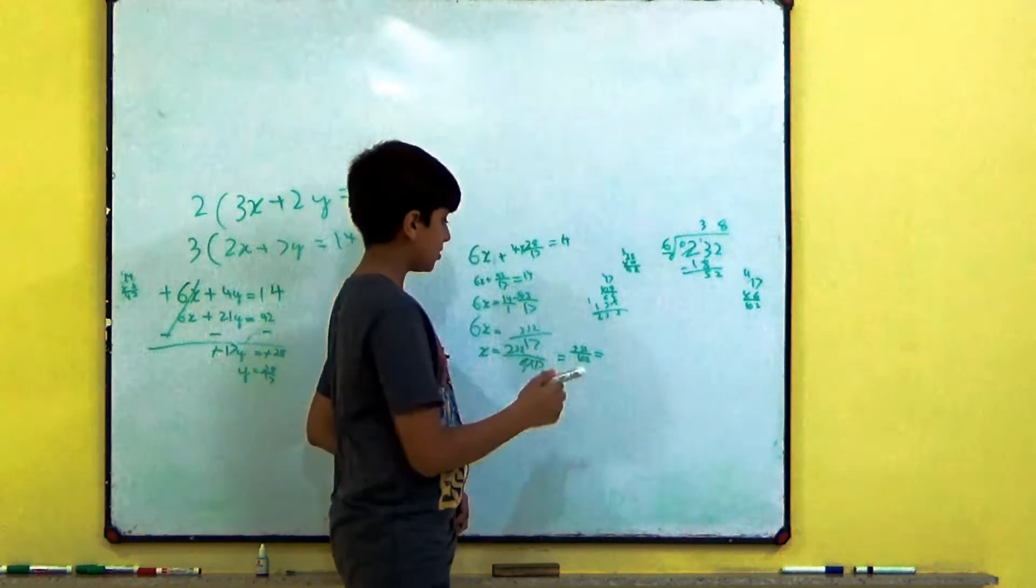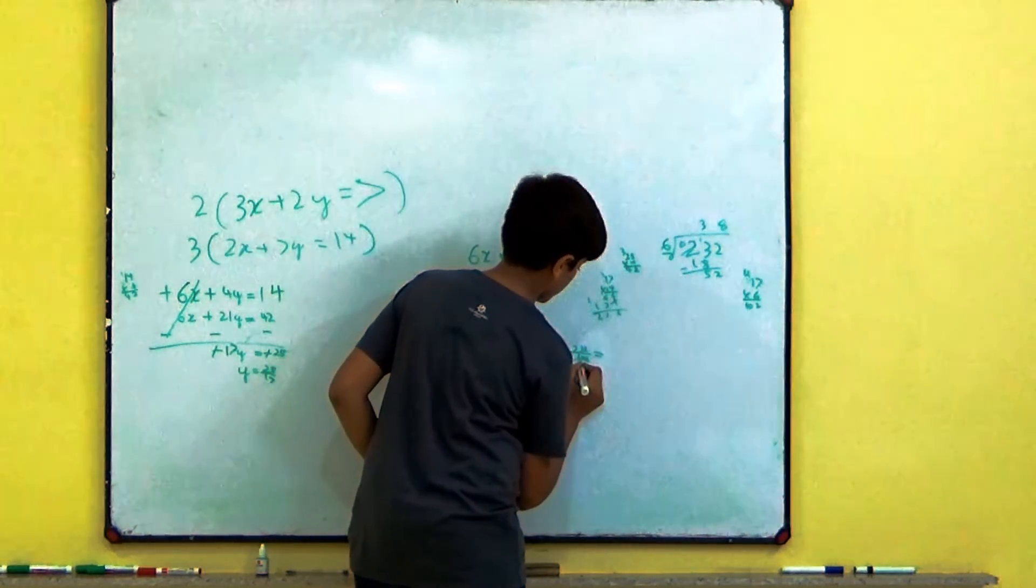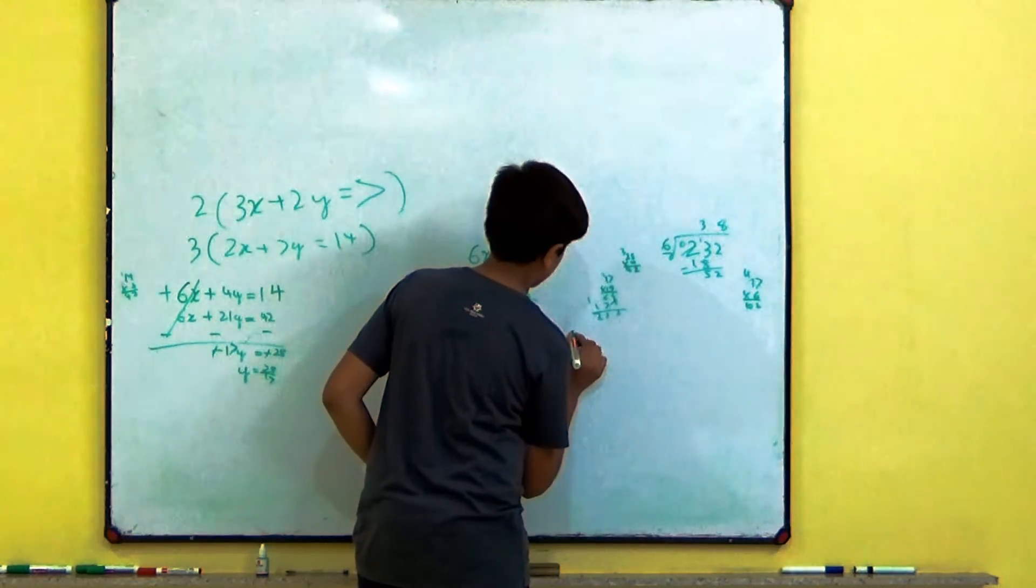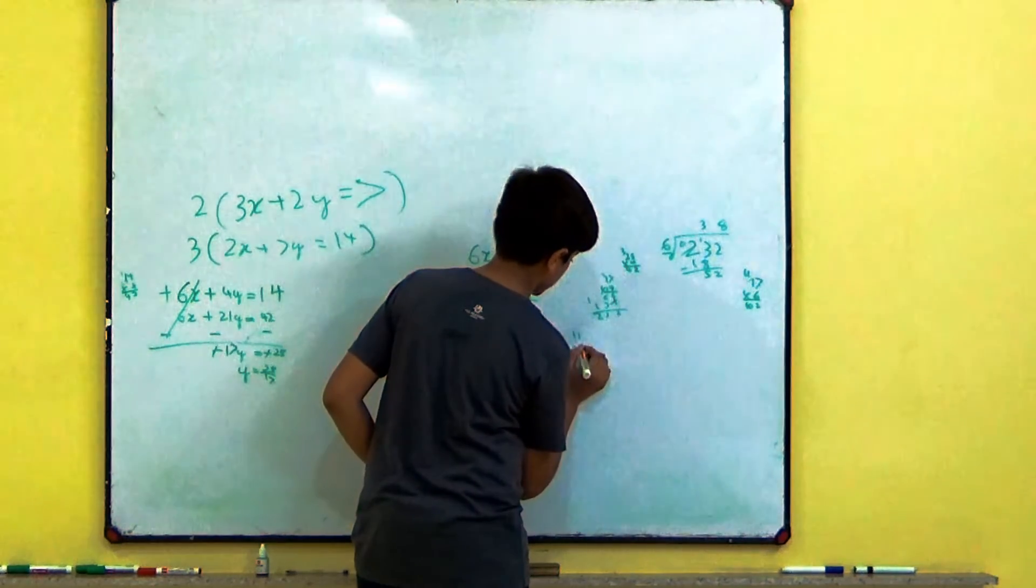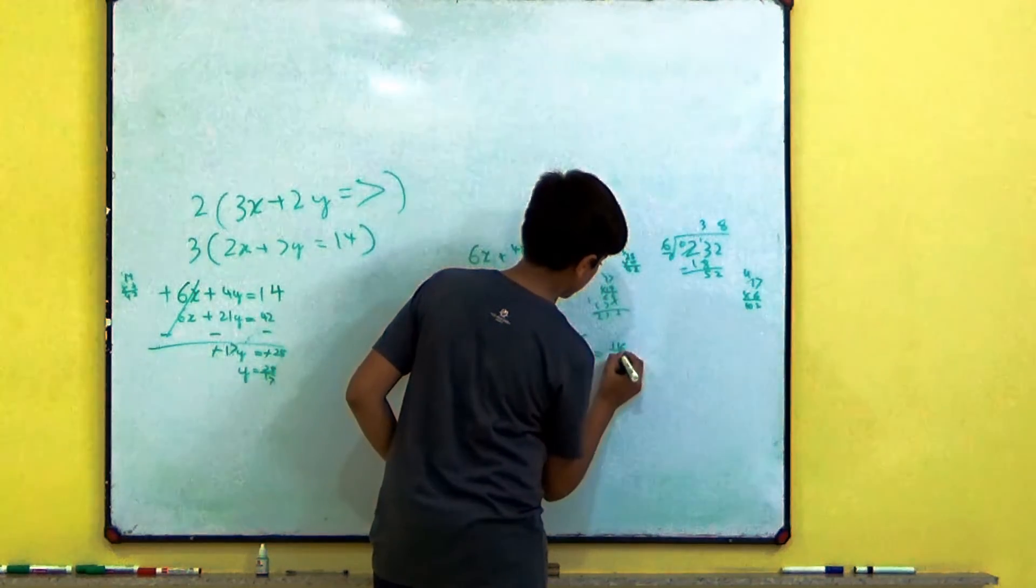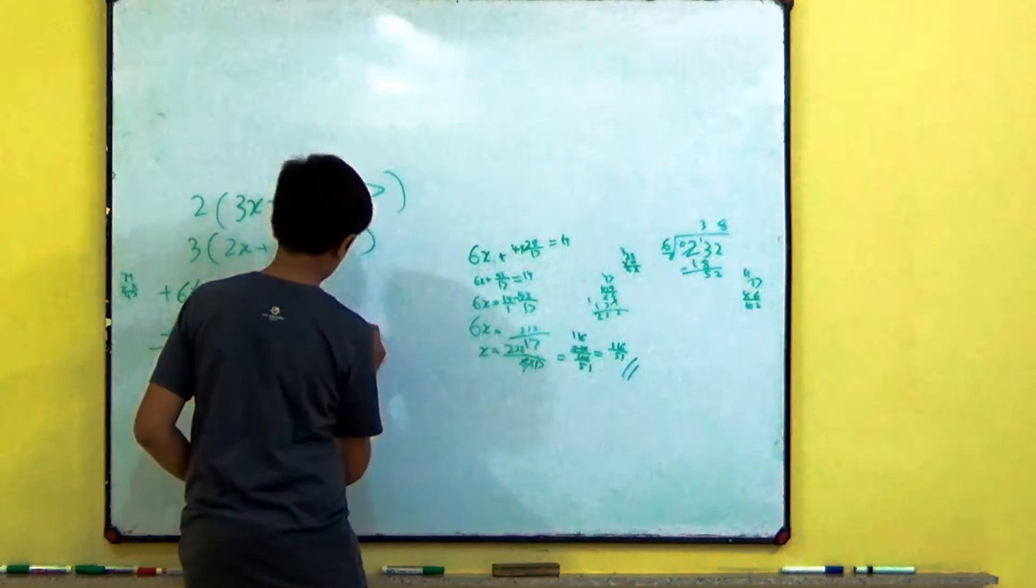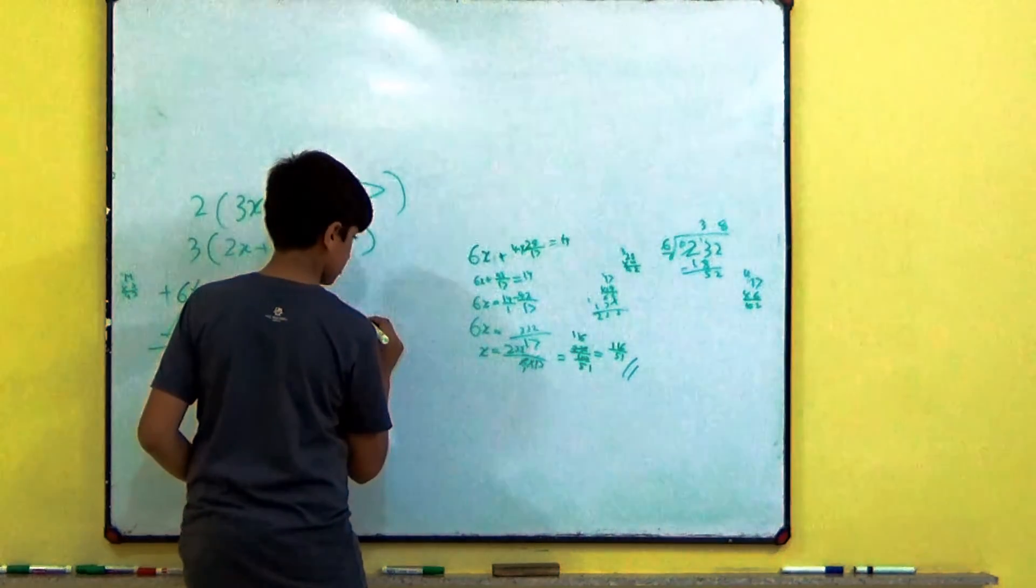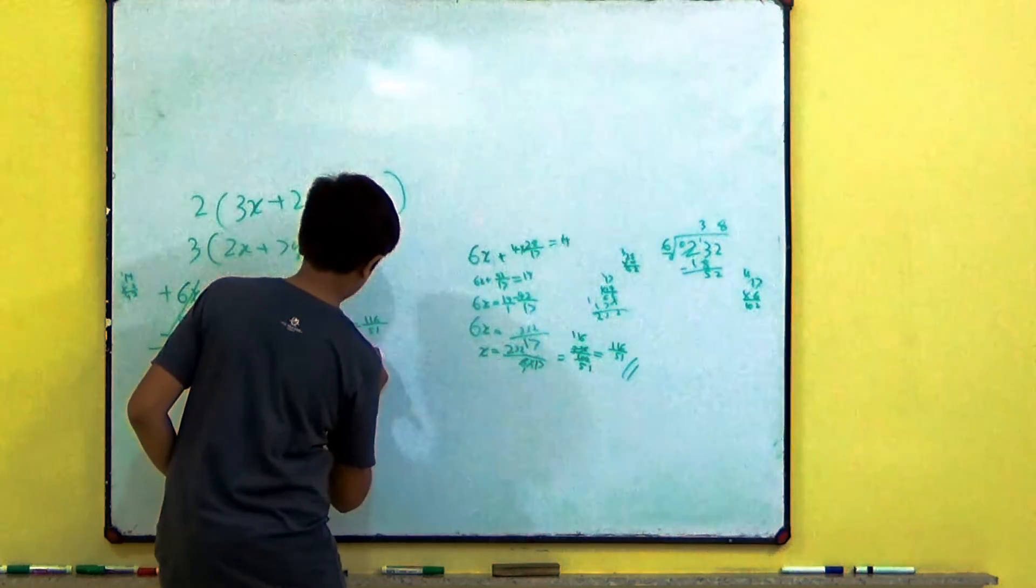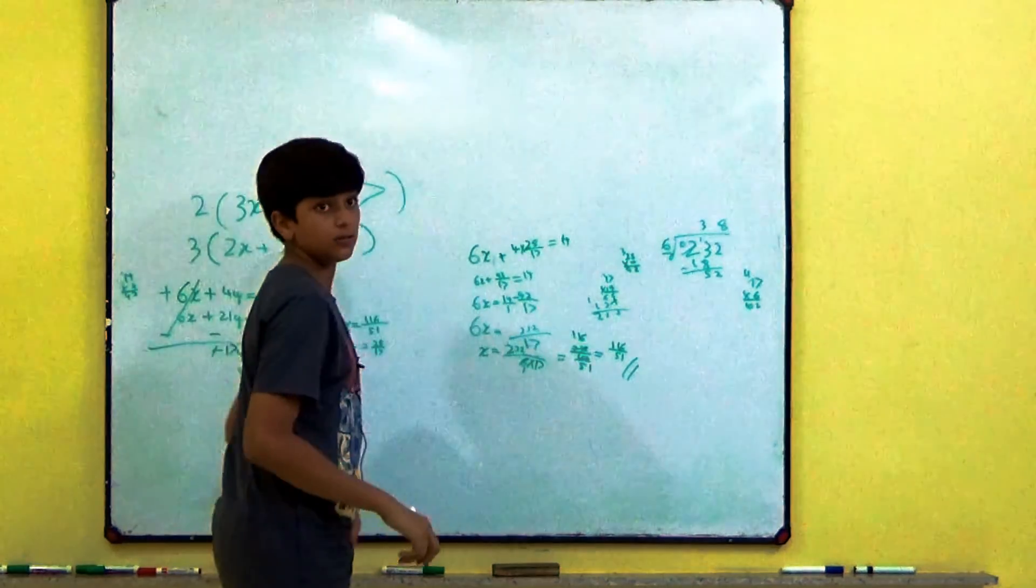Now this can be cut right? 232 from 2, yes cut. The carry is 116 upon 51 will be the answer. So X is equal to 116 upon 51 and Y is equal to 28 upon 17. OK.